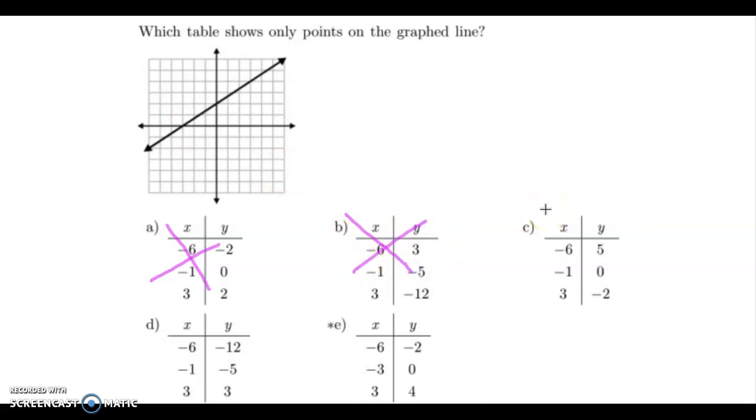Let's try letter C. Once again, I always start on the origin, which is 0, 0. My x coordinate, which is left and right, tells me to move left 6 because it is negative: 1, 2, 3, 4, 5, 6. My y coordinate is a positive 5, which means I go up 5: 1, 2, 3, 4, 5. Definitely not on that line. See you later, C. That is not working.